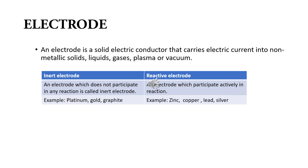In an electrochemical cell, reduction and oxidation reactions take place at the electrodes. The electrode at which reduction takes place is known as cathode, and the electrode at which oxidation takes place is known as anode. These electrodes are used in our topic electrochemistry.